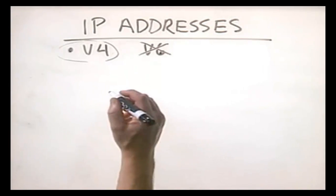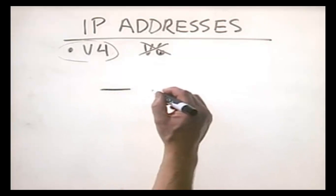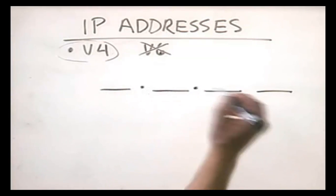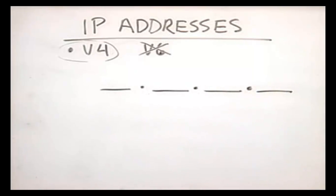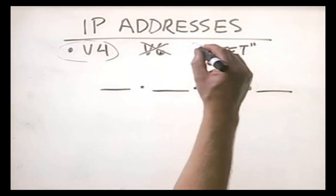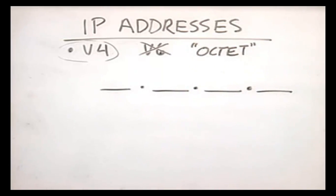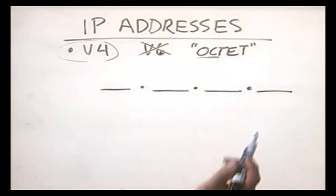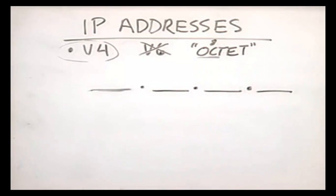A version 4 IP address is composed of four different octets separated by periods. When I first heard the term octet, I was too embarrassed to ask anyone what it meant and went for years not really being sure. Well, take a look at the word — what does 'oct' mean? Oct means eight. Groups of eight.